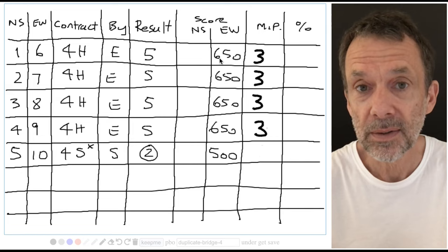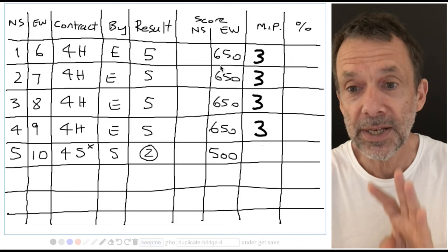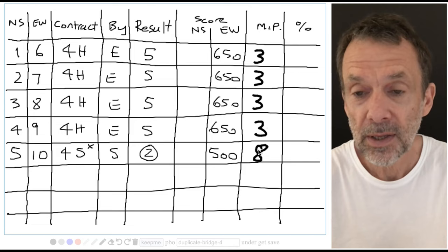So we beat pair one. Minus 500 better than minus 650, we did better than pair one. So we scored two match points for beating pair one, two match points for beating pair two, two more match points for beating pair three, and two match points for beating pair four. So we score eight match points.